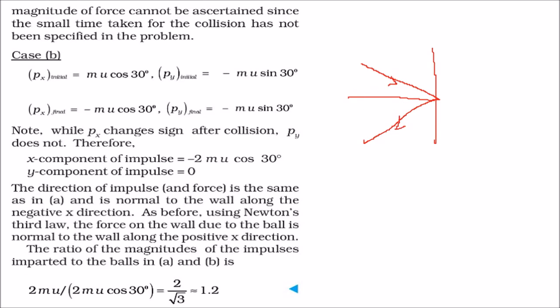So what will be the px initial? That will be MU cos theta. If I make this as cos theta and this as sin theta, this is theta. The direction is like this. So what will be the px? Always,